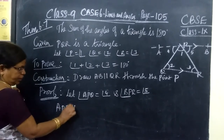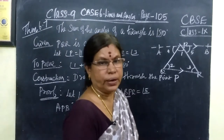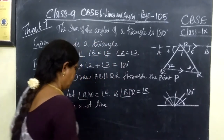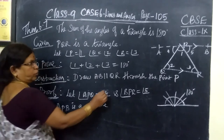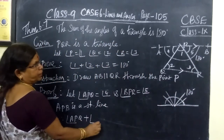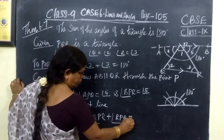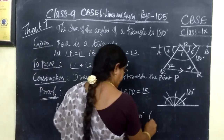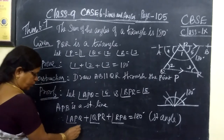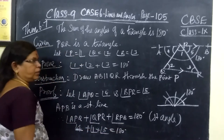Now, APB is a straight line. Since APB is a straight line, we know a straight angle is 180 degrees. So the sum of all adjacent angles equals 180 degrees. Therefore, angle APQ plus angle QPR plus angle RPB equals 180 degrees, that is, angle 4 plus angle 1 plus angle 5 equals 180 degrees.